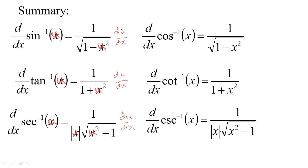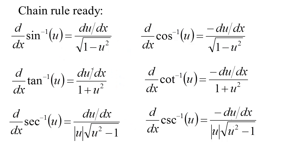To save space, we take that du/dx and tuck it up into the numerator. So for the arc trig derivatives written in a form ready for the chain rule, we see that a function of x inside replaces the variable in the derivative formula, and then there's a du/dx written up in the numerator indicating the derivative of the inside function.